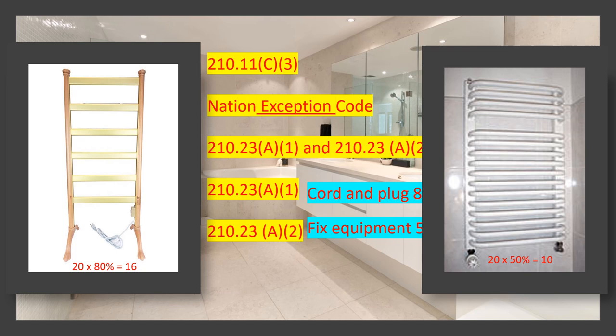Now let's talk about a different scenario: am I allowed to run the bathroom lights off of another circuit, like the hallway circuit? The answer is yes — you are allowed to tap lighting from anywhere. You may have to do this if you meet the 50% or 80% rule. For example, if you had a fixed towel bar that was 11 amps, you could not run lighting off that bathroom branch circuit. In that case, you could pull lighting from the hallway, but you couldn't run receptacles or anything else off that other circuit.